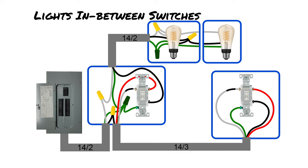At the top, we've got the first light fixture — or it could be the only one, but in this example we're using two. All three wires — hot, neutral, and ground — go into that box and then carry over into the electrical box for the secondary light fixture, or third or fourth, depending on how many fixtures you have on that circuit.